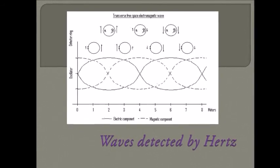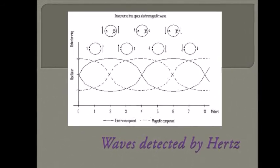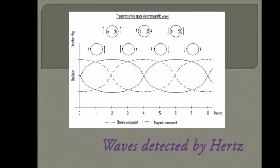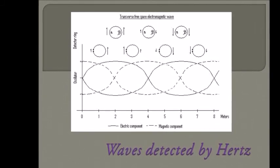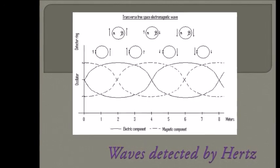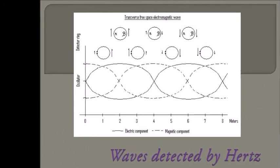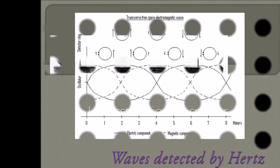Hertz measured Maxwell's waves and demonstrated that the velocity of these waves was equal to the velocity of light. The electric field intensity, polarity and reflection of the waves were also measured by Hertz. These experiments established that light and these waves were both a form of electromagnetic radiation obeying Maxwell's equations.